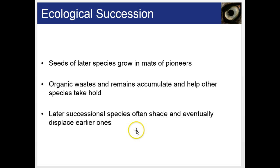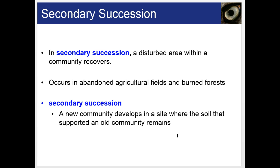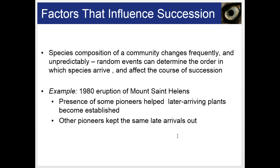In secondary succession, a disturbed area within a community recovers — it occurs in abandoned agricultural fields and in burned forests. The species composition of a community changes frequently and unpredictably; random events can determine the order in which species arrive and affect the course of succession. For example, in 1980, the eruption of Mount St. Helens: the presence of some pioneers helped later arriving plants become established, while other pioneers kept the same late arrivals out.